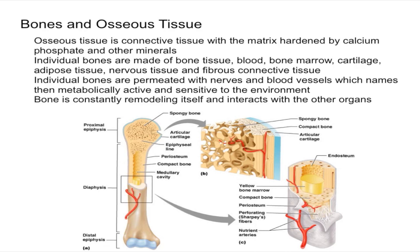In this video I'm going to talk about what bone and osseous tissue is. Osseous tissue is also known as bone tissue, and it's just a connective tissue with the matrix hardened by calcium phosphate and other minerals.